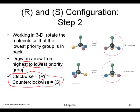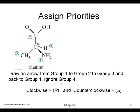R means 'right' in Latin and S means 'left' — sinister, that's where it comes from. Here's alanine: nitrogen is the highest priority, the carboxyl carbon is second because it has double-bonded oxygen and another oxygen giving three oxygens, which beats three hydrogens. Going from one to two to three is counterclockwise, so this is S-alanine.